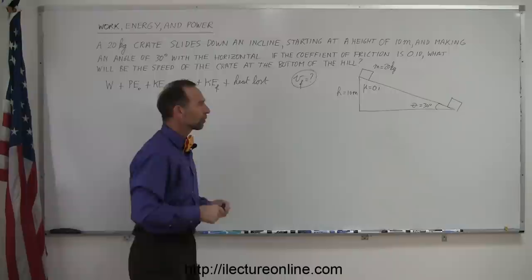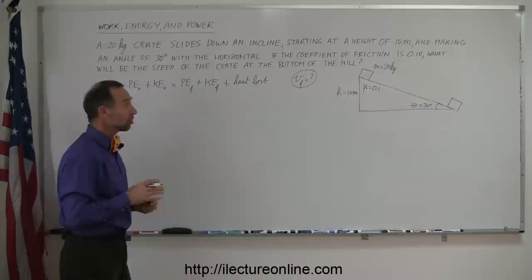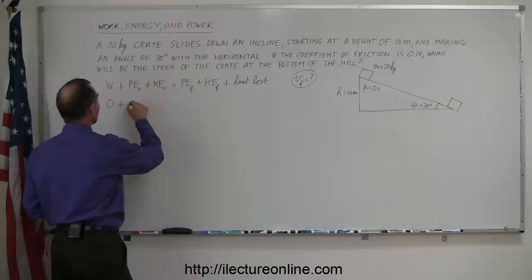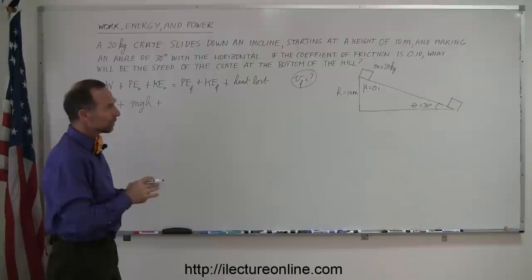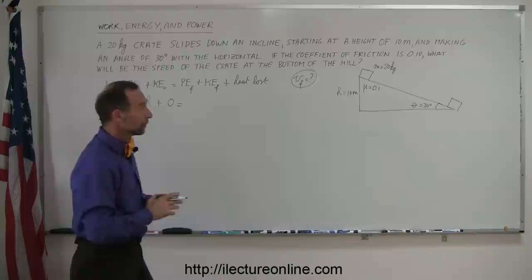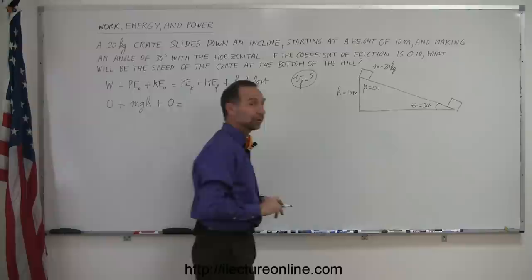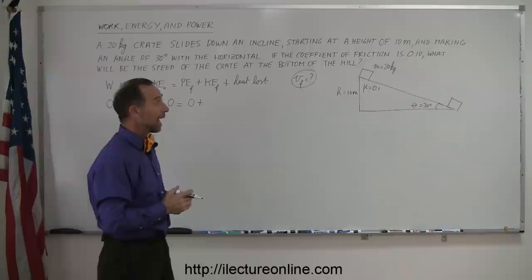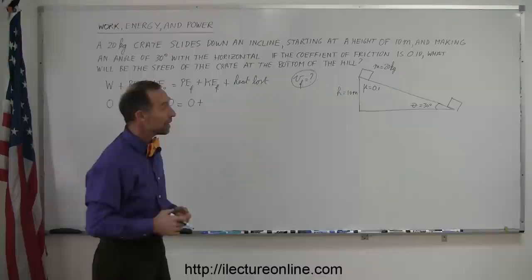The initial potential energy is there because it started from an initial height, so it's equal to mgh — that's the definition of potential energy. Assuming the crate started from rest, kinetic energy initial would be equal to 0. When the crate reaches the bottom of the hill, there's 0 height — that's our reference height — so there would be no potential energy at the end. The kinetic energy at the end would be one-half mv squared.